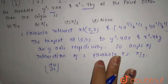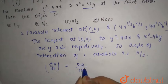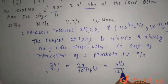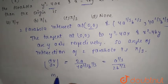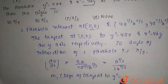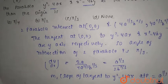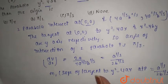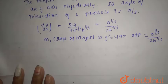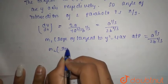At point P, m₁ is the slope of the tangent to y² = 4ax, which equals a^(1/3) / (2b^(1/3)). So m₁ = a^(1/3) / (2b^(1/3)). This is the slope of the tangent to y² = 4ax at point P.